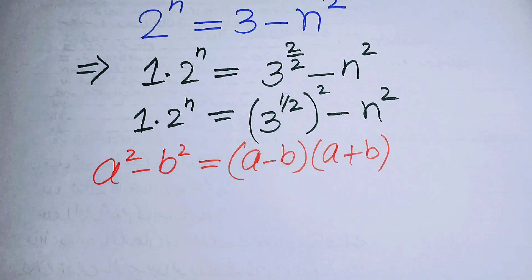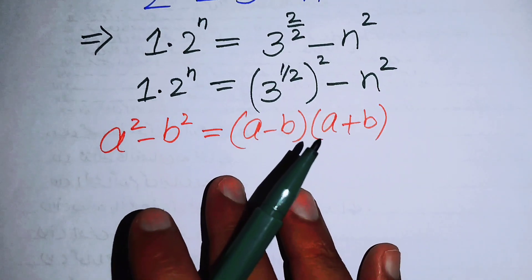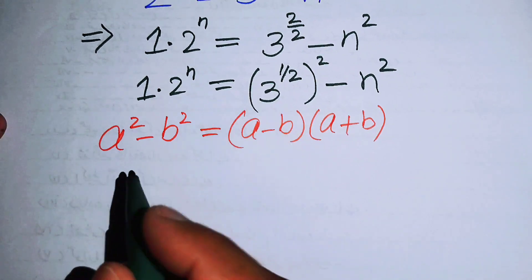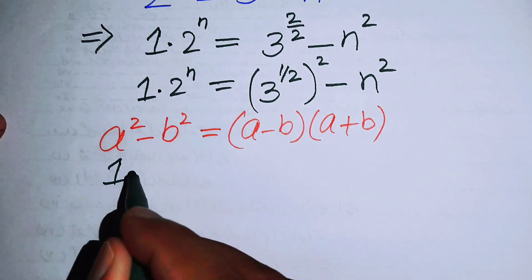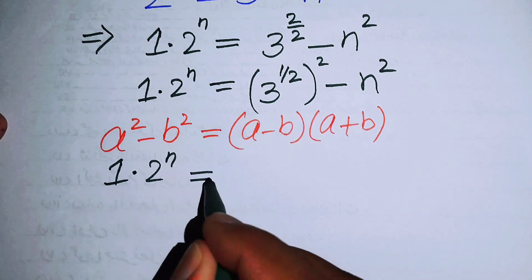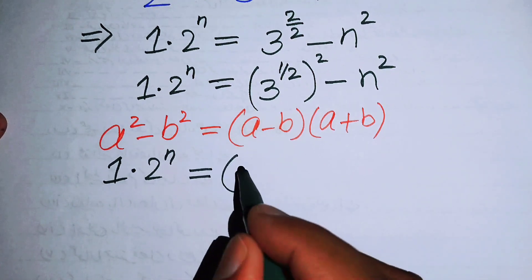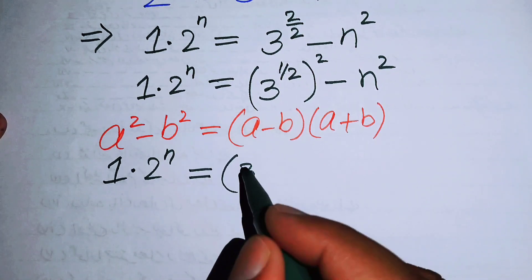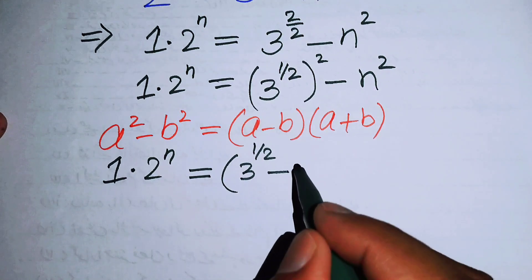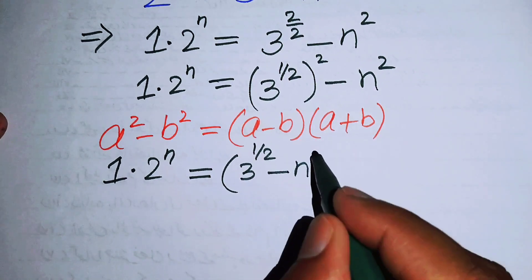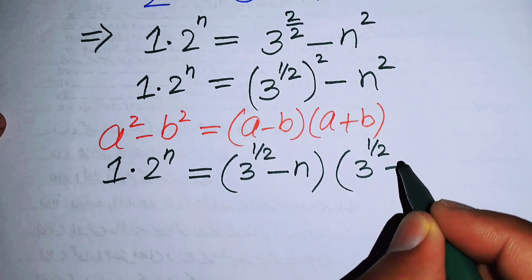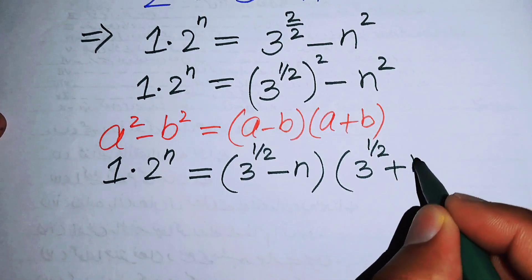We apply this identity to the right-hand side, so the equation becomes: 1 times 2 to the power of n equals (3 to the power of 1 over 2 minus n) times (3 to the power of 1 over 2 plus n).